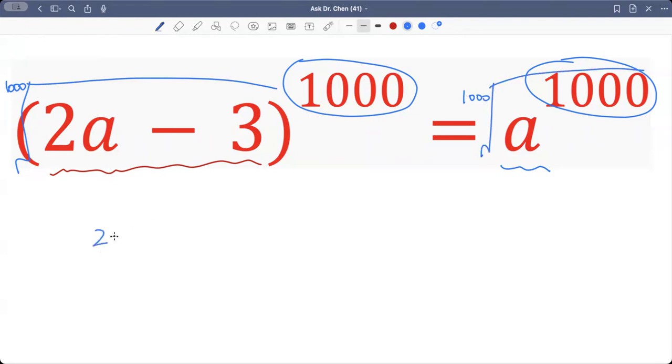In this case, the left-hand side will get 2a minus 3, 1000 divided by 1000.